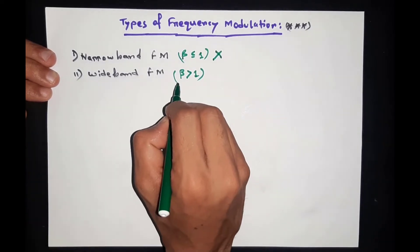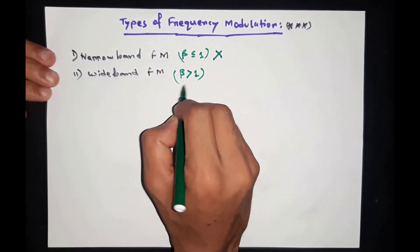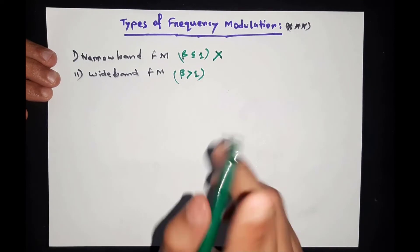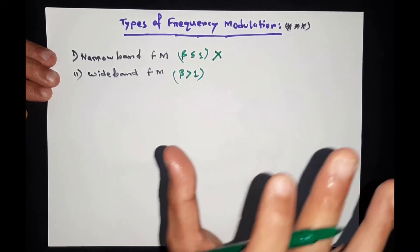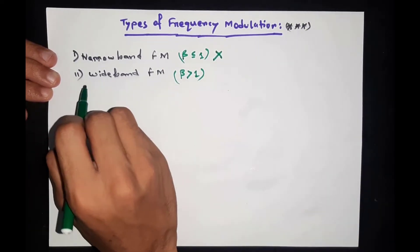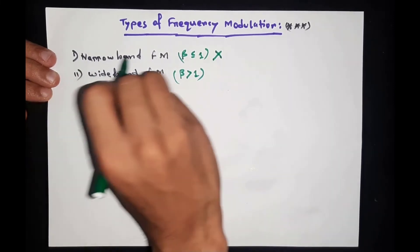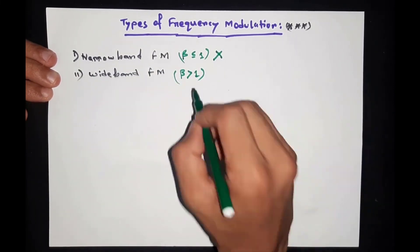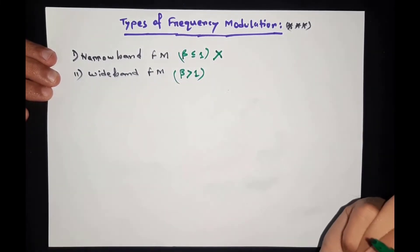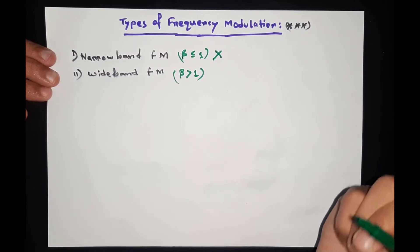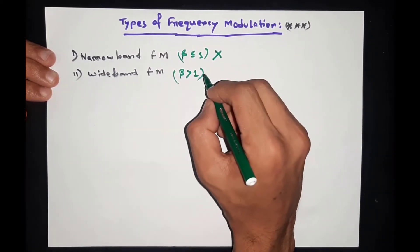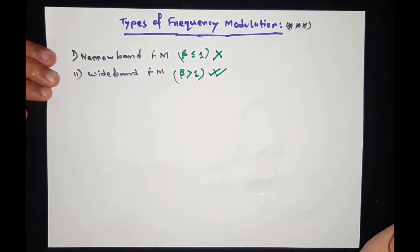This is the wide band frequency modulation, which uses the modulation index beta. Looking at the bandwidth, we will examine the next problem. After frequency modulation, we collect the wide band frequency modulation. The narrow band frequency modulation and wide band frequency modulation use the same full carrier.